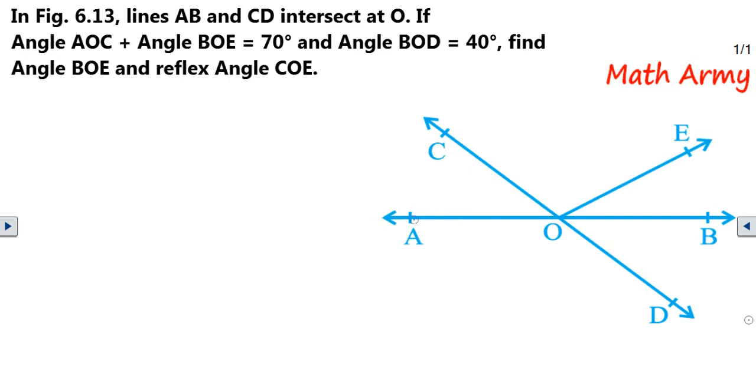Guys, too much information has been given to us. So let us try to split the question again and again. First of all, let us understand there are two lines AB and CD and where they are intersecting? They are intersecting at O.